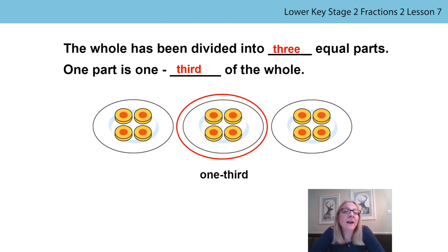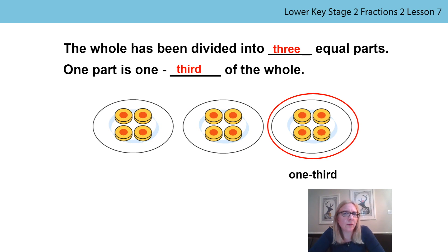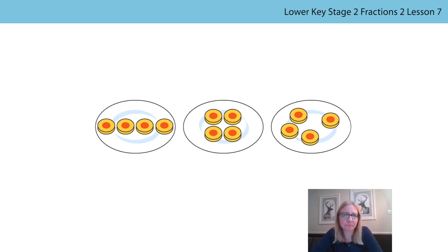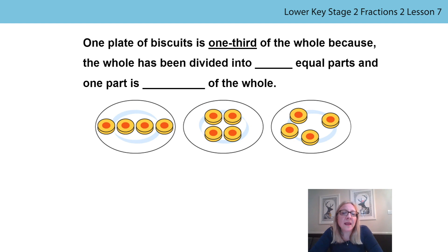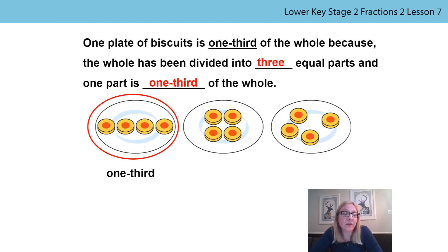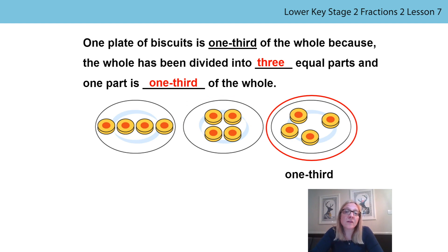How did you get on? You're correct. These biscuits also represent one third of the whole. How about the last plate of biscuits? Is that also one third? Yes, you're correct, it is. What do you notice with these images? What's the same and what's different to the previous slide? Do each of the plates still represent one third? Pause the video and have a think or maybe talk to somebody else in your house. The biscuits are arranged differently on each of the plates but there are still the same amount of biscuits on each of the plates. One plate of biscuits is one third of the whole because the whole has been divided into three equal parts and one part is one third of the whole. This is one third, this is one third, and this is also one third of the whole.